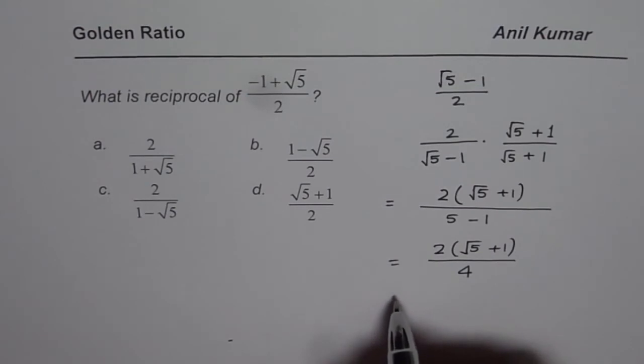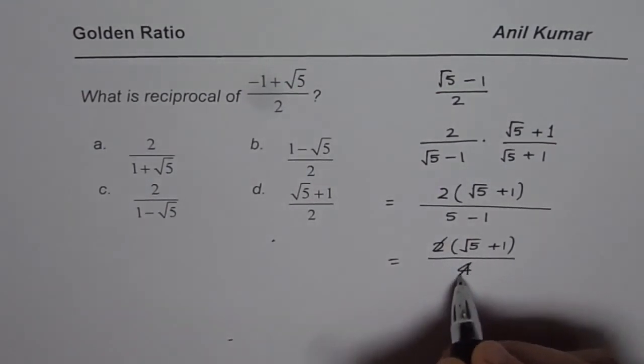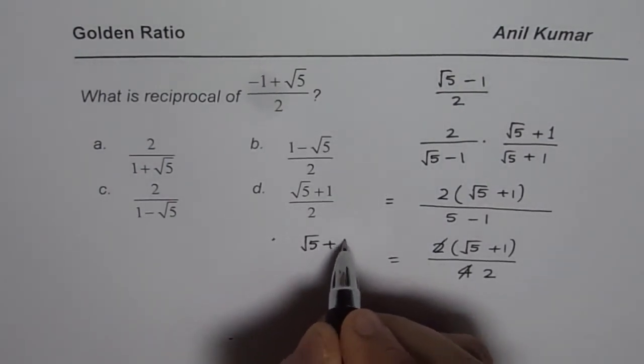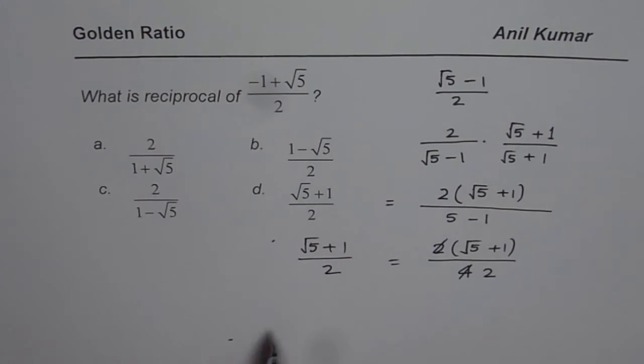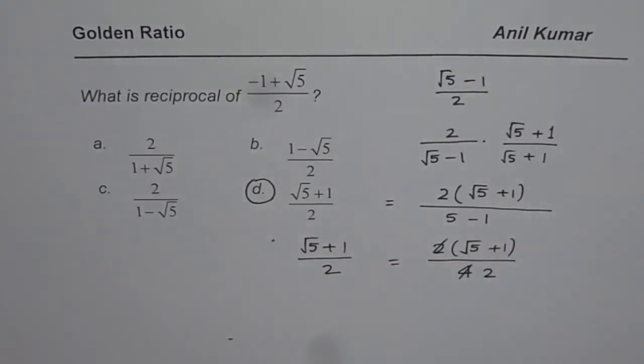Now that could be simplified, right? So once I simplify this, let me write it here. Then what do I get? I get, let me divide here itself. And then what I get is √5 + 1 divided by 2. Do we have that option? Yes, we do. So option D is just the right answer. So that is how you can do it.